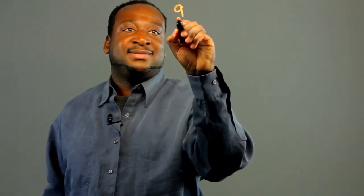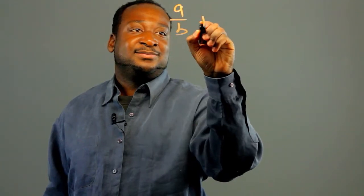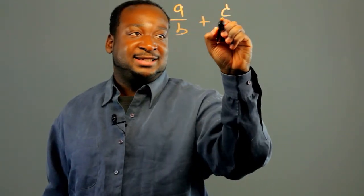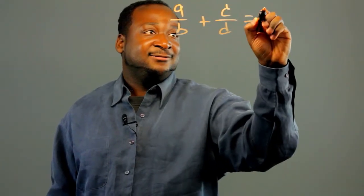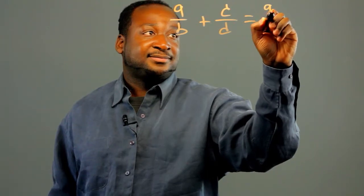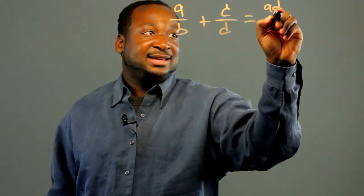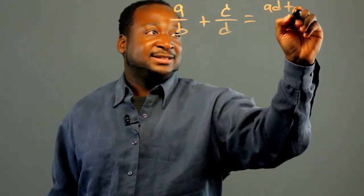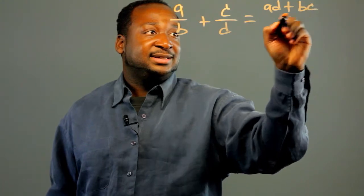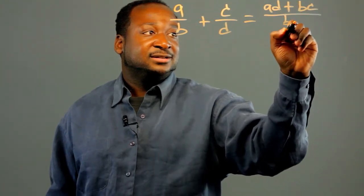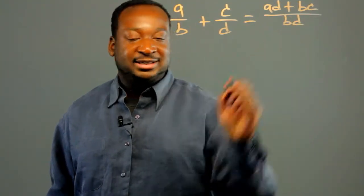Basically, we've introduced the formula A/B plus C/D, which equals AD plus BC over BD.